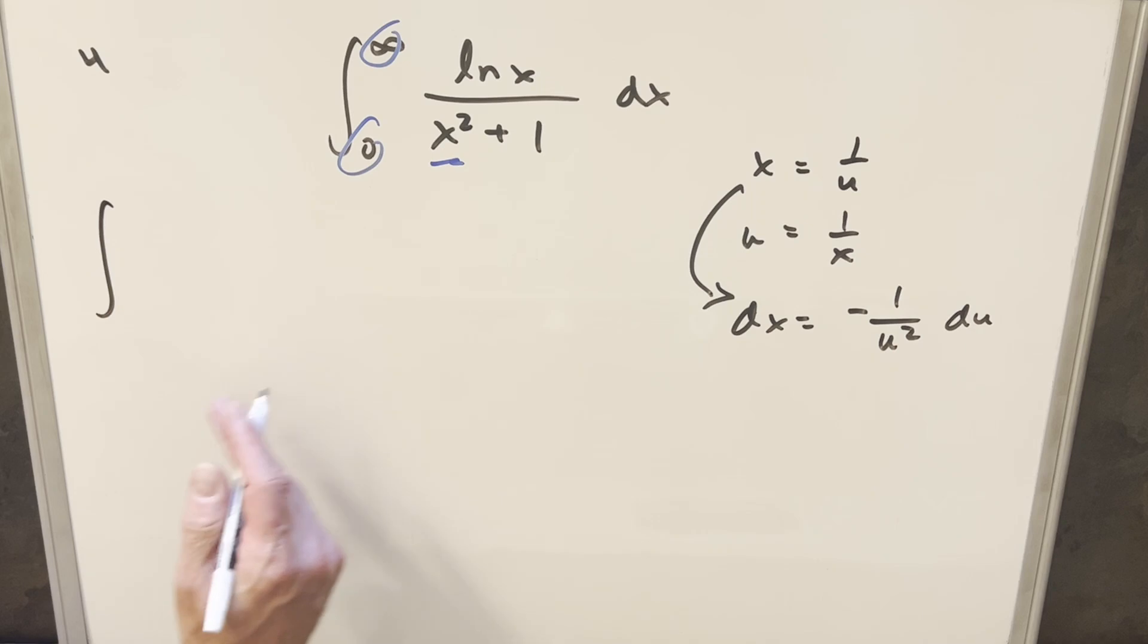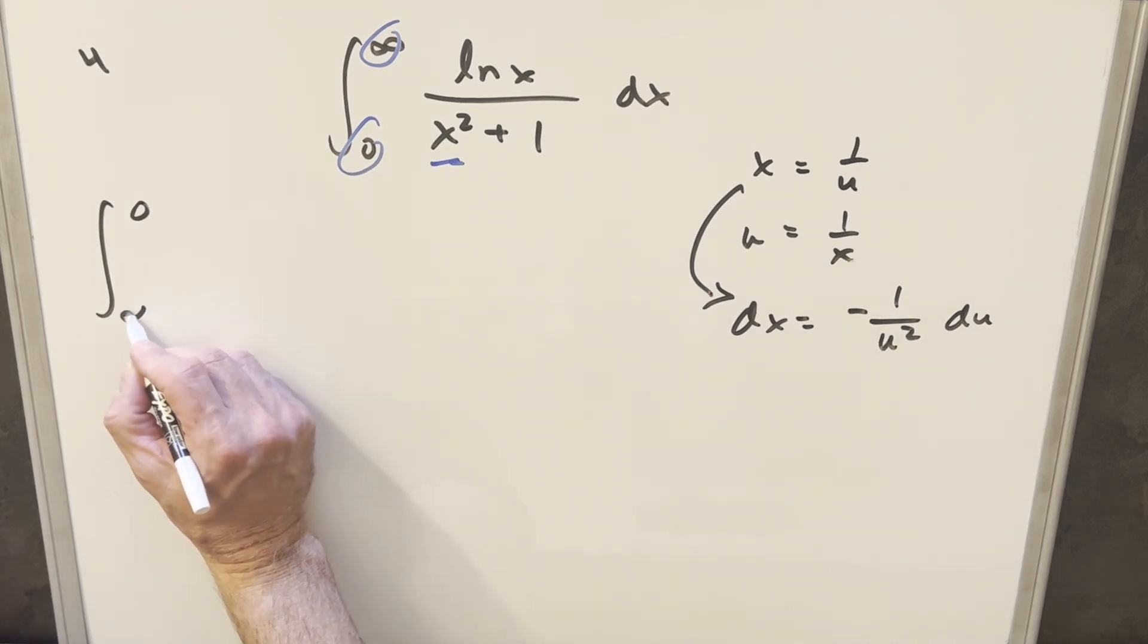So first we'll make the substitution, we'll update our bounds. So plugging infinity in here, that's going to give me a zero for the upper bound. Then when you plug zero in here, this lower bound is going to infinity.